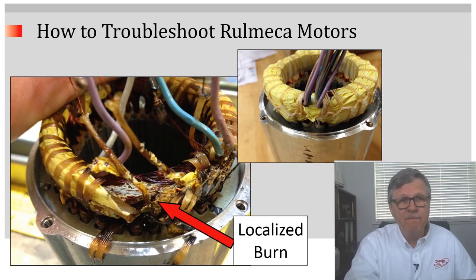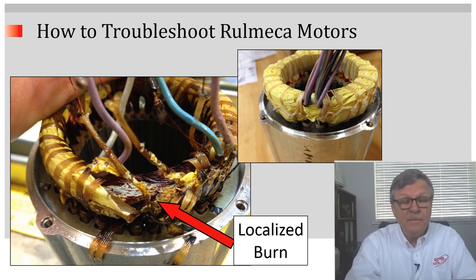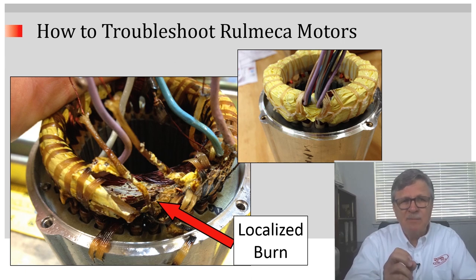Here we see a localized burn, and this is typical of a voltage surge. A voltage surge can occur from a lightning strike or from a resonance-induced voltage spike. A resonance-induced voltage spike will occur when a VFD is located far from a motor and the line is not filtered. A lightning strike or a resonance-induced voltage surge will appear as a very small pinprick of damage on the stator.